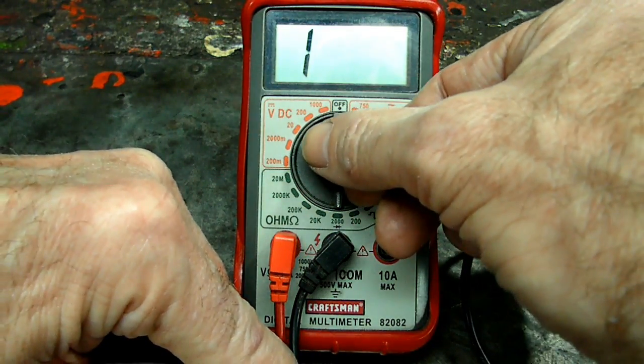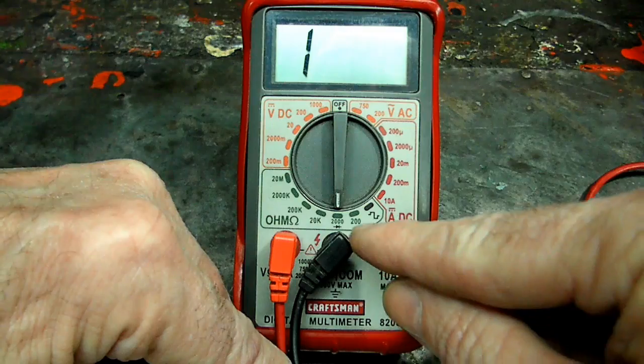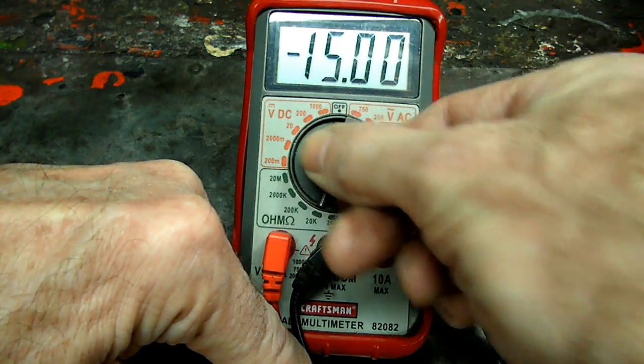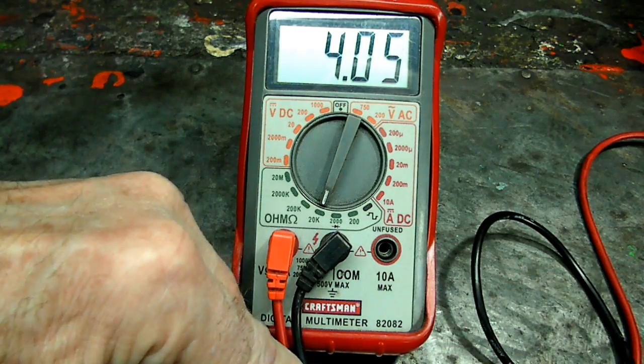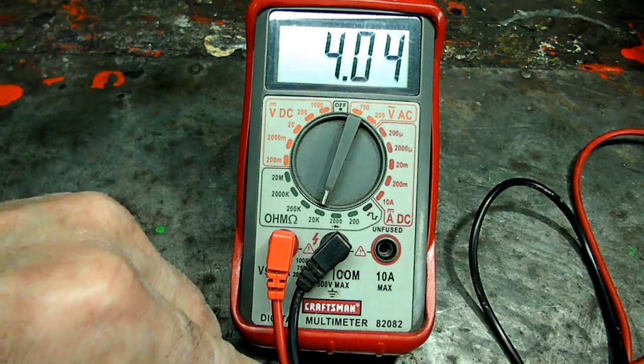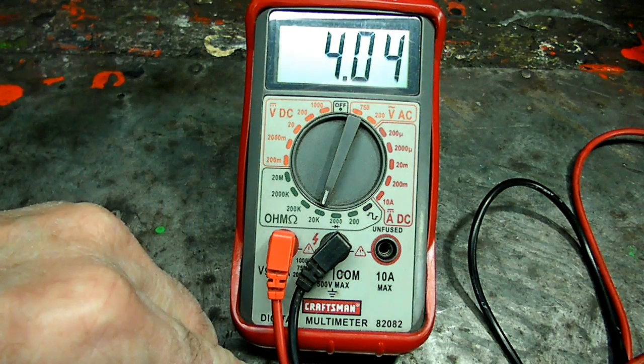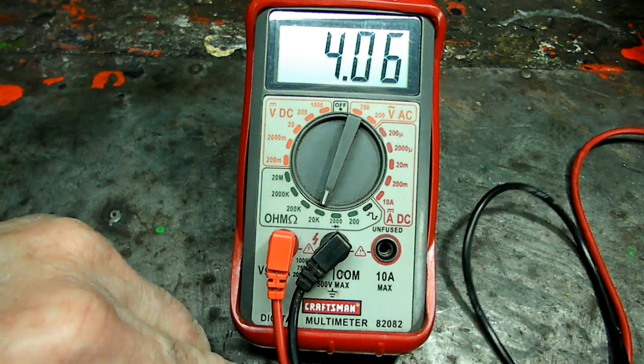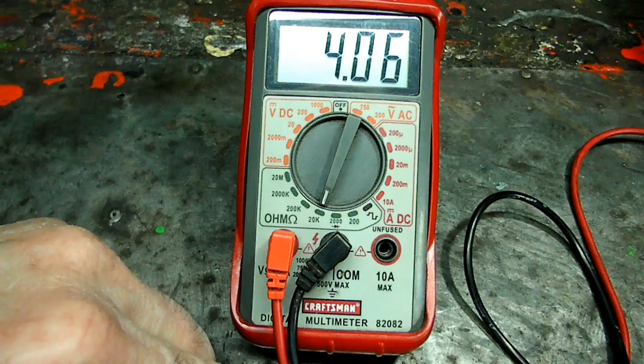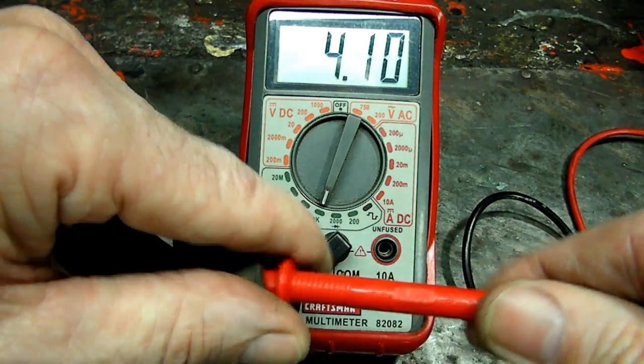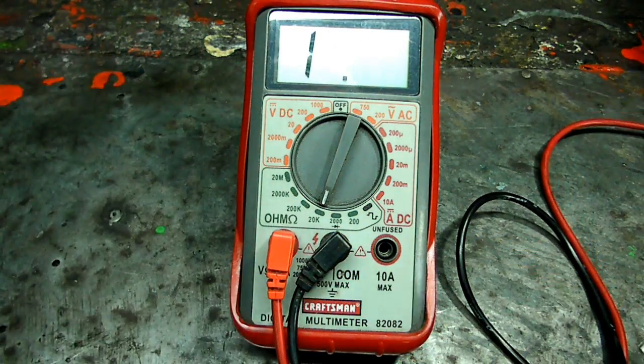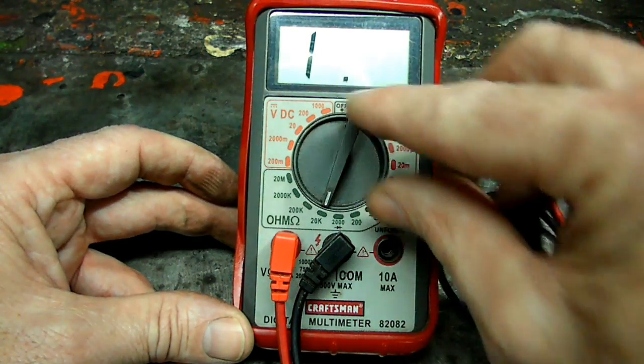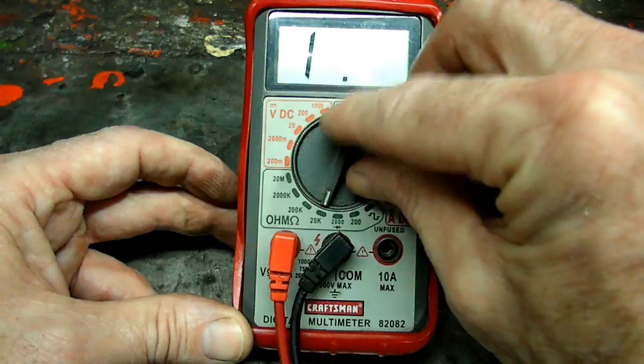The reading is beyond what the meter can do. So we're going to go up one more. You can see it's on 2,000, we're going to go to 20,000 and we should get a reading. There. This wire is reading around 4,000 ohms. So if you operate your meter and you see that one, just go up to the next highest reading.